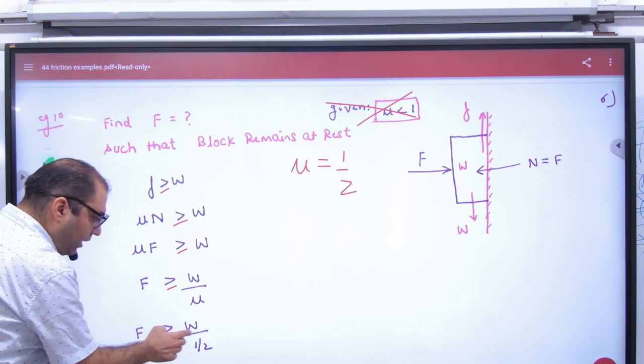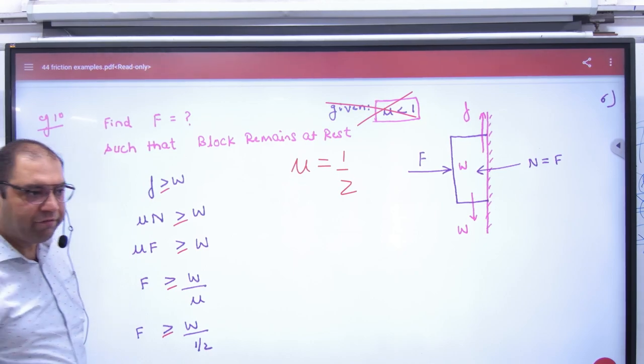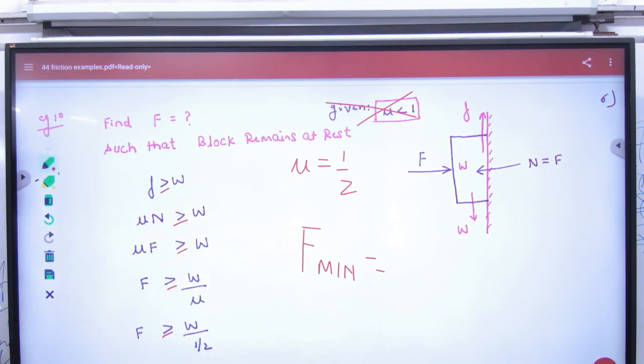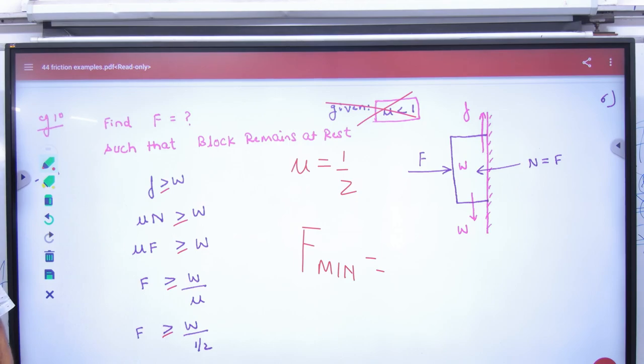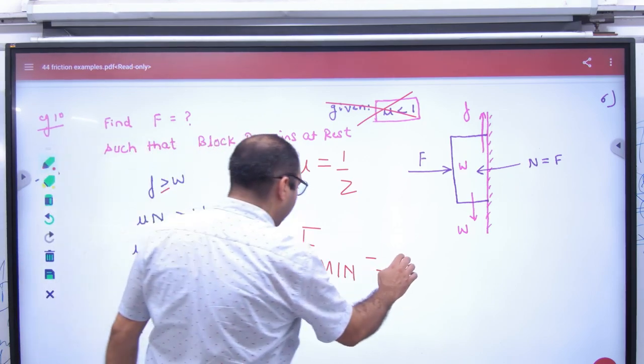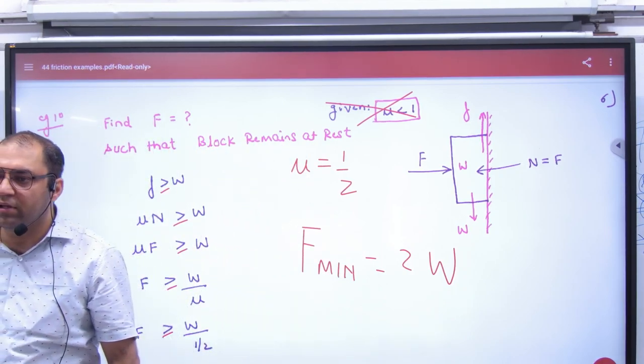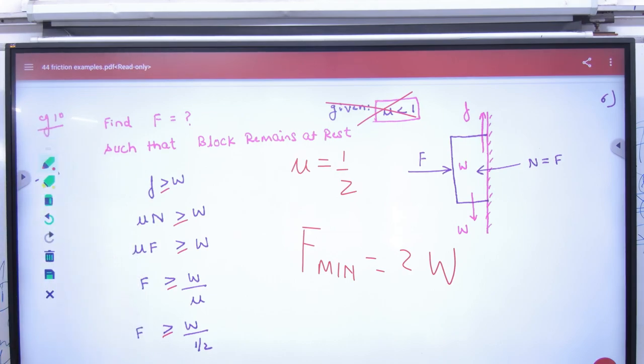Mu kitna given hai? Half. Half upar gaya to answer kya gaya. F should be greater than equal to 2W. To phir kahega, find minimum force so that block doesn't fall down. Answer kya hoga? My marks in maths greater than equal to 33 hai. To minimum kitna hai? 33 hai. So greater than hata do. Equal to laga ke 2W. This will be asked in paper as minimum force. And if not asked, then greater than equal to will be the answer. Samajh me aa raha hai online? Yes sir.